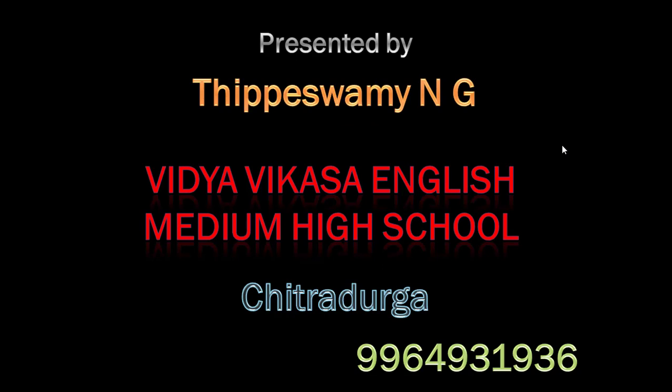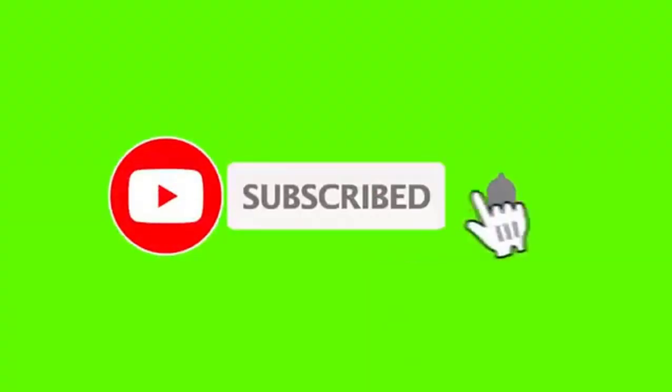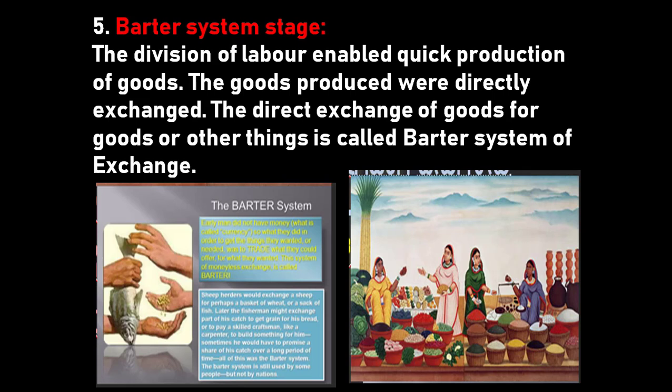In this session we are going to get information about the barter system stage. The division of labor enabled quick production of goods. This concept of division of labor came into existence in the agricultural stage and continued into the handicraft stage. When we come to the barter system, the goods produced were directly exchanged. The direct exchange of goods for goods or other things is called the barter system of exchange.